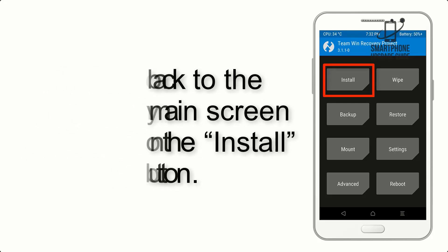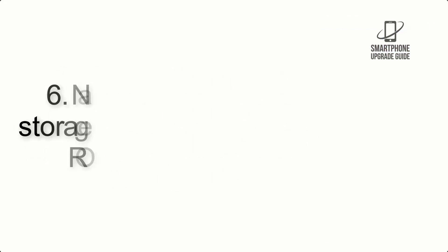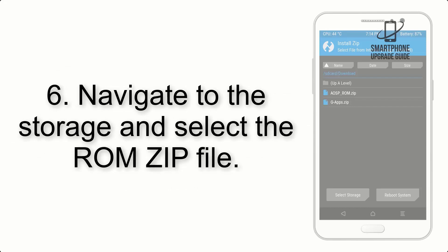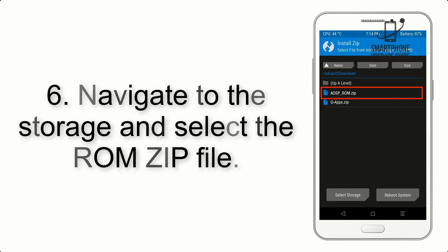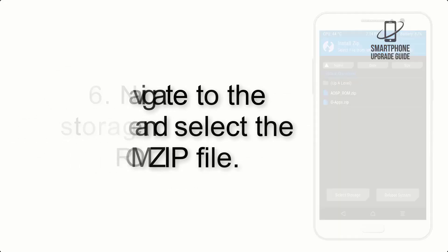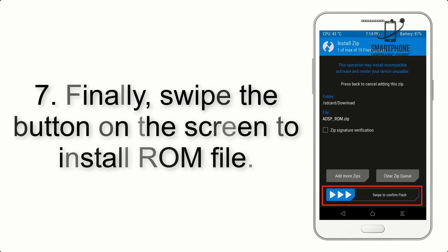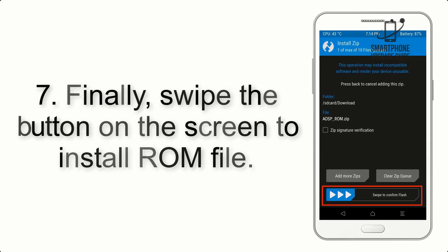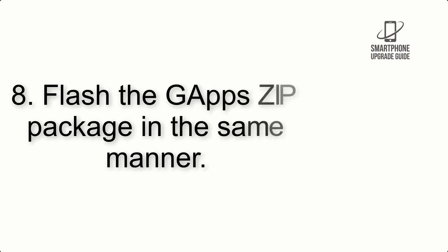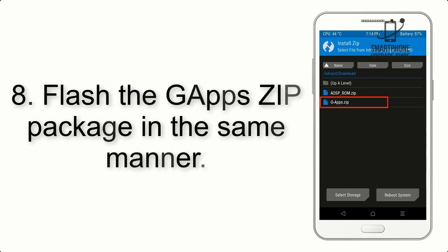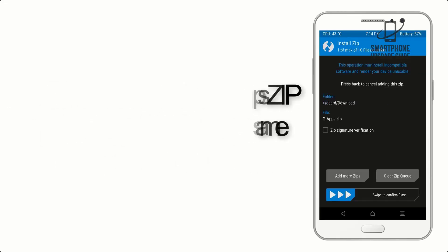Tap on the Install button. Step 6: Navigate to the storage and select the ROM zip file. Step 7: Finally, swipe the button on the screen to install the ROM file. Step 8: Flash the GApps zip package in the same manner.